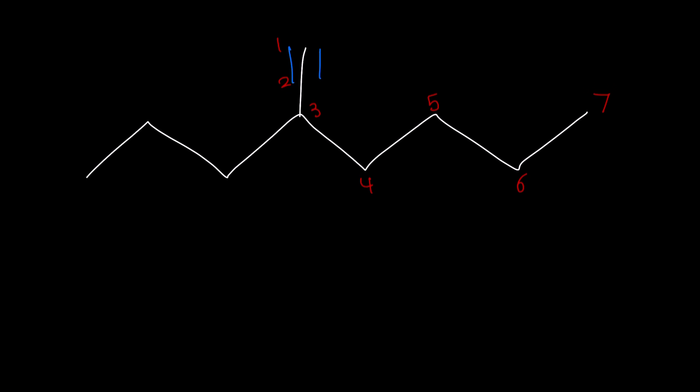So, let's start naming this. We have seven carbons, which is associated with heptyne. And the triple bond is across carbons one and two. We're going to go with the lower one, which is one heptyne.